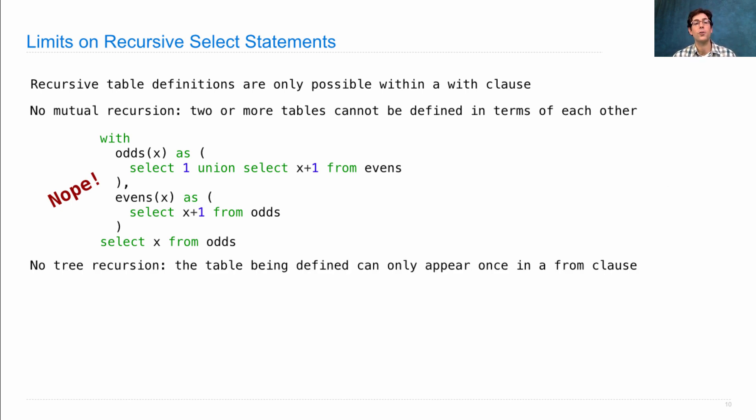You're also not allowed tree recursion. The table being defined can only appear once in a from clause. So you can't say I'm defining the integers as 1, and then all the integers minus 1, and all the integers plus 1.